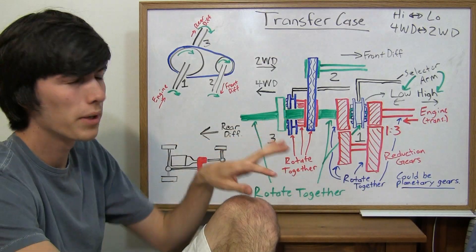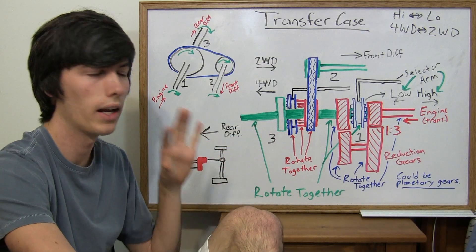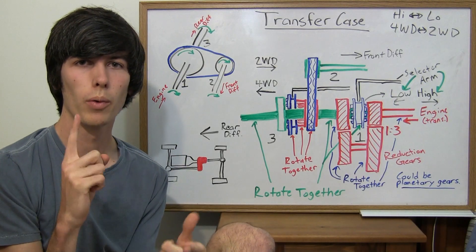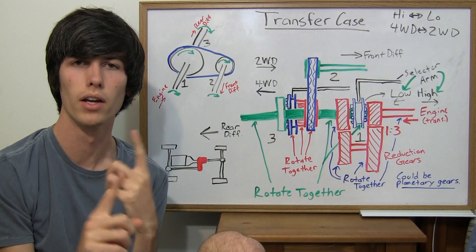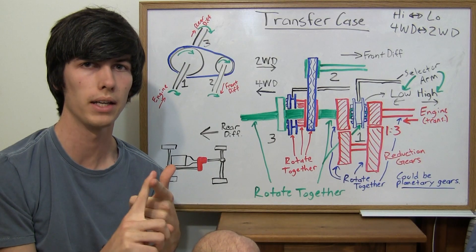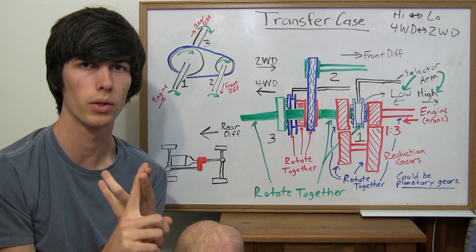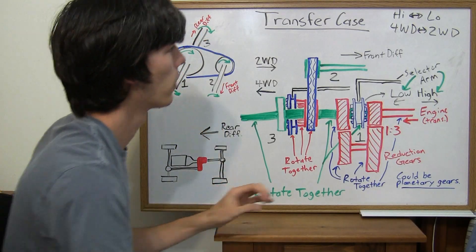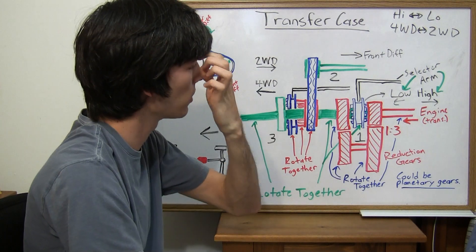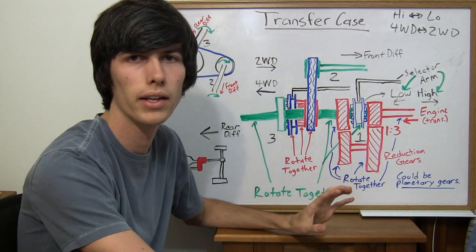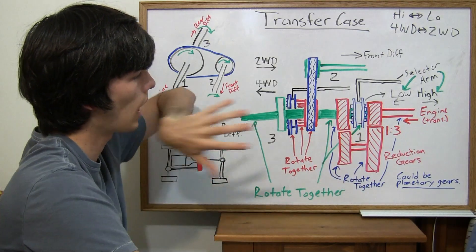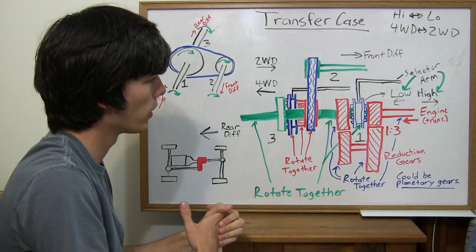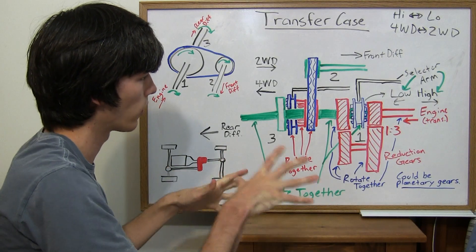This diagram may look a little tricky at first, so I'll go through it carefully. Remember, we've got two goals: see how it switches between high and low gear — switching to low for more torque at a lower speed — and how it switches between two-wheel drive and four-wheel drive. This can be done with planetary gears, but for this demonstration I'm showing it with standard gears using a counter shaft, which is a little easier to visualize.